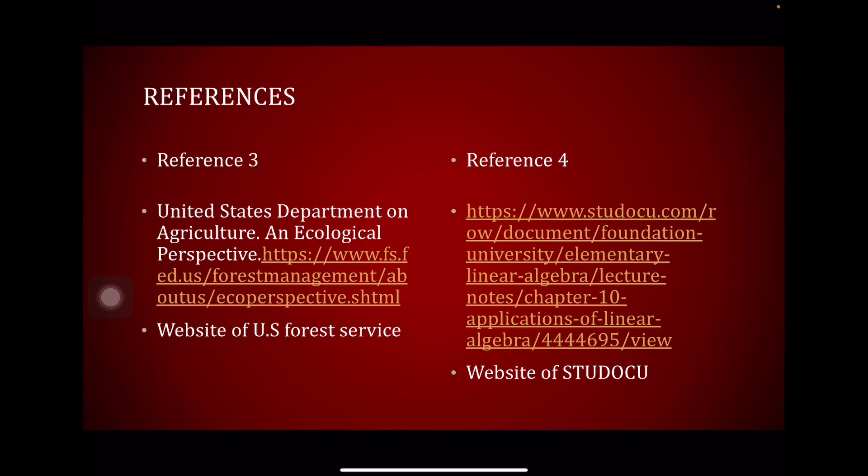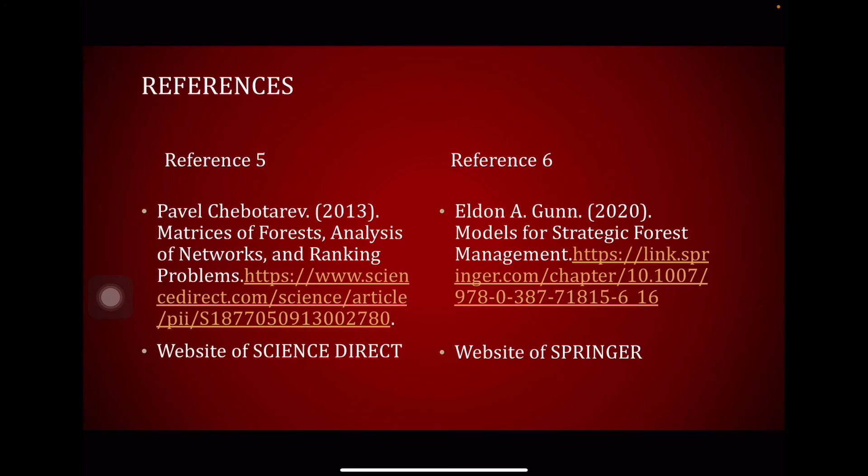We have reference four. This reference four is actually same like reference one. It is a note about forest management but we want to compare both notes so we can choose the best part that we can bring to our video. Our reference five, we have article from Science Direct which is matrices of orders, analysis of network and ranking problems. Also, extra readings for our application. And the last one is models for strategic forest management, an article from Springer. From this website of reference six, we look about our application model.